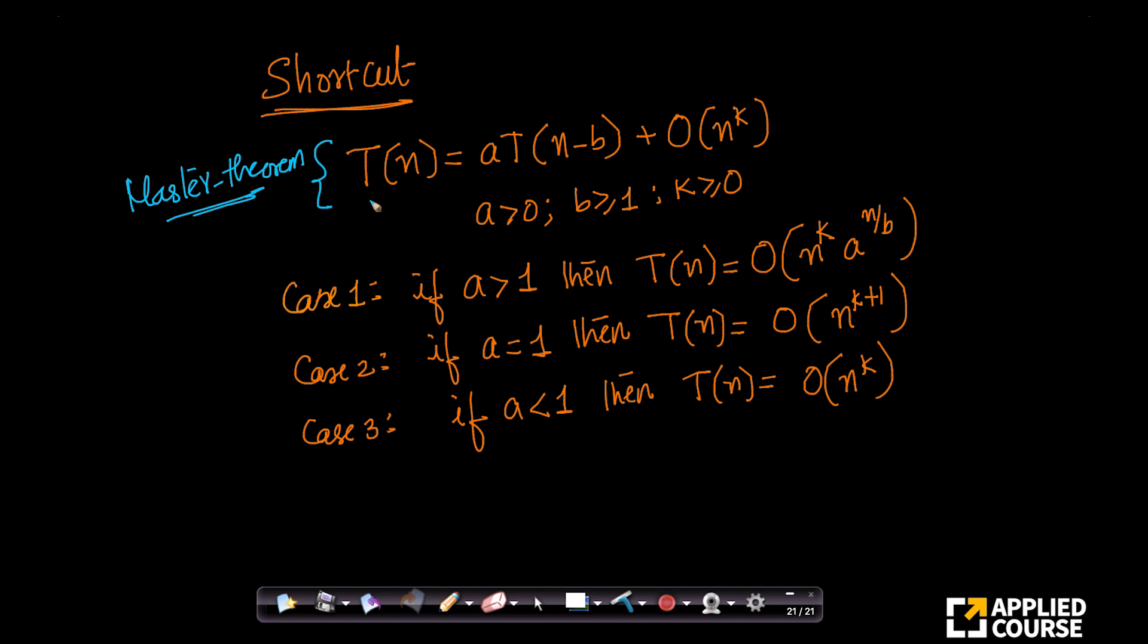Imagine if I have a recurrence relation like this, where you have T(n) as a multiplied by T(n-b). Here, look at this. This is not n by b. This is n minus b, in the subtraction form. In the master theorem, we see aT(n/b), right? So that's a difference here. And if what you have here is big O of n^k, the requirement is that a should be greater than 0, b should be greater than or equal to 1, and k should be greater than or equal to 0.